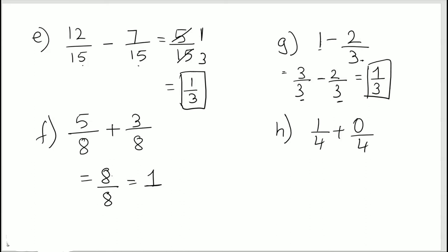Next one, 1 by 4 plus 0 by 4. So we know that when we divide 0 by any number, this term becomes 0. So 1 by 4 plus 0 would be 1 by 4 because any number added to 0 is the number itself.